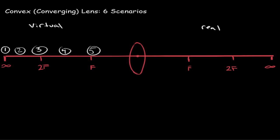On the other side, we draw a one at our focal point, two in between f and 2f, three at 2f, four in between 2f and infinity, and five at infinity. What this trick does is: if I draw an object at one on our virtual side, we know that it will appear on the focal point of the real side. If I draw an object at two, we know it will appear in between f and 2f on the real side. This trick will help you remember where the image will appear if you place the object in these five locations.